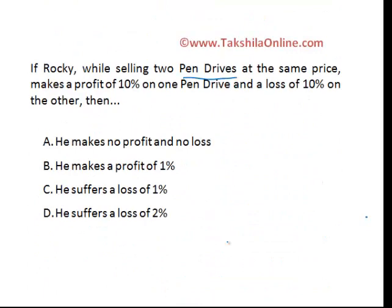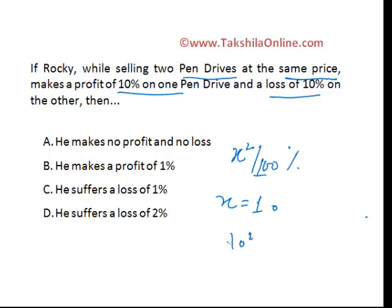Let's take one more example. Rocky, selling two pen drives at the same price, makes a profit of 10% on one and a loss of 10% on the other. What would be the profit percentage or loss? From the previous concept, loss equals x² by 100, where x equals 10. So loss equals 10² divided by 100 — equal to 1%. Notice that selling price is not given here. As discussed, if profit percentage and loss percentage are the same, total loss is independent of selling price, so you don't even need it.